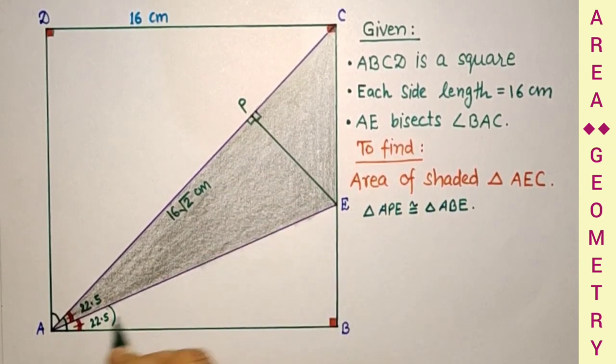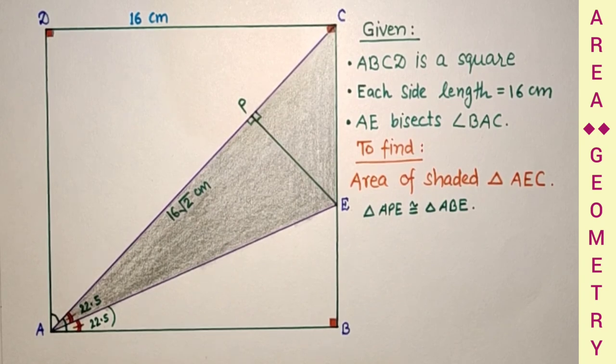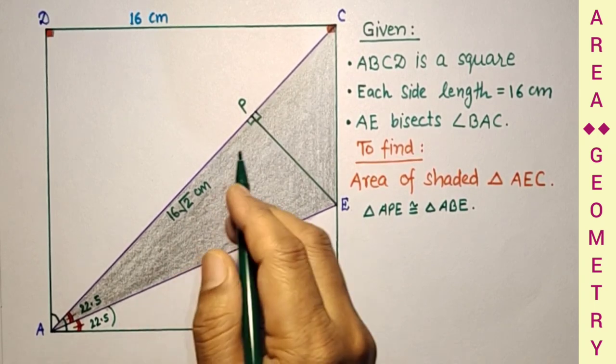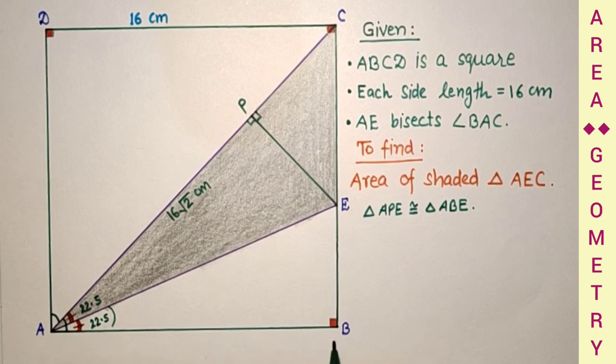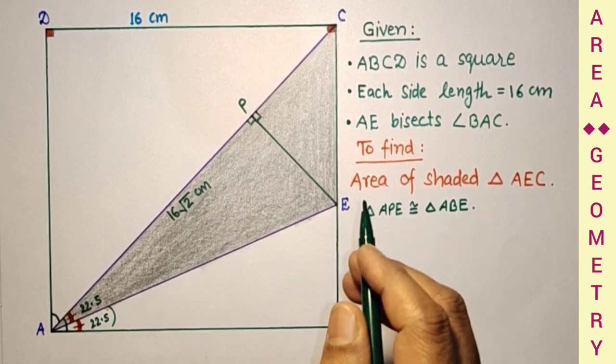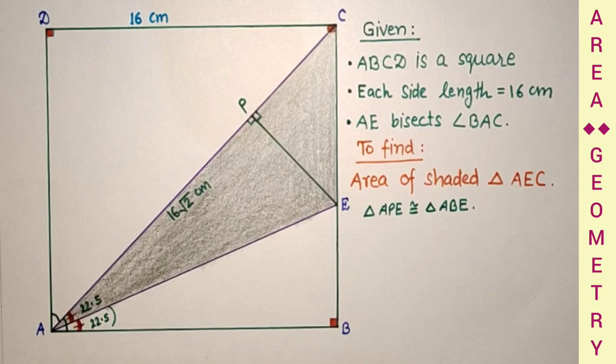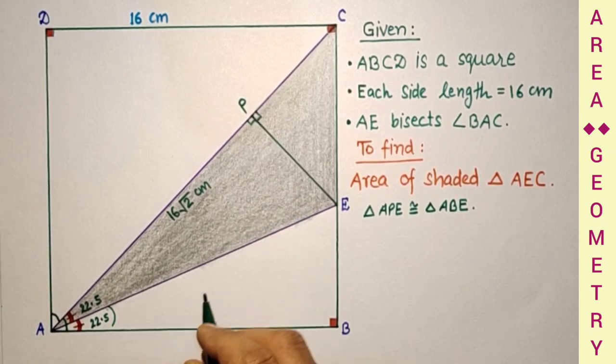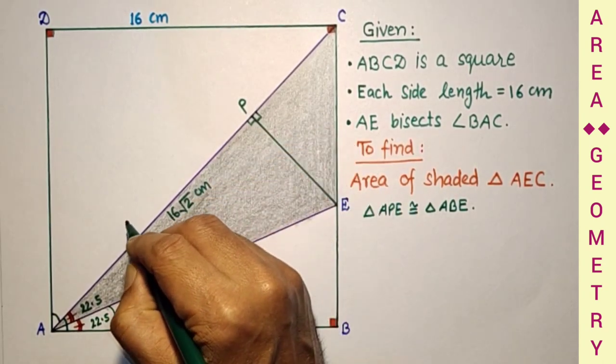By angle angle side test of congruency. Since these two are congruent triangles, corresponding sides AB and AP are equal. But AB is 16 cm because AB, BC, CD, DA all are 16 cm. So we found AP as 16 cm.